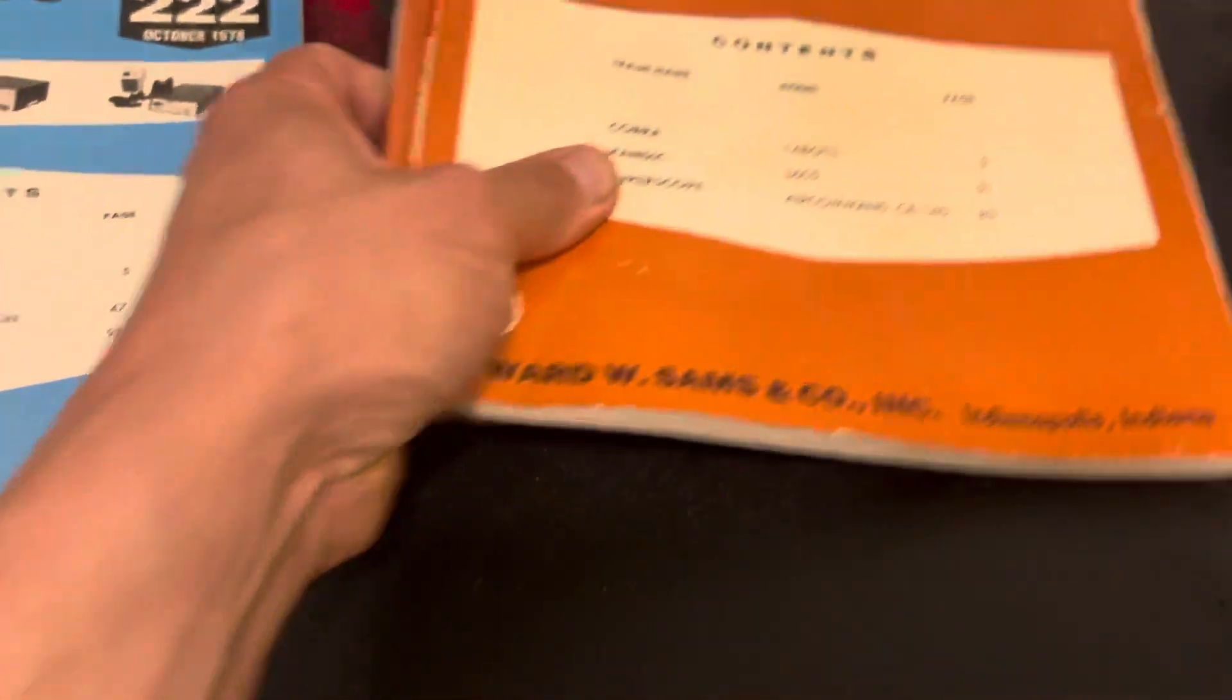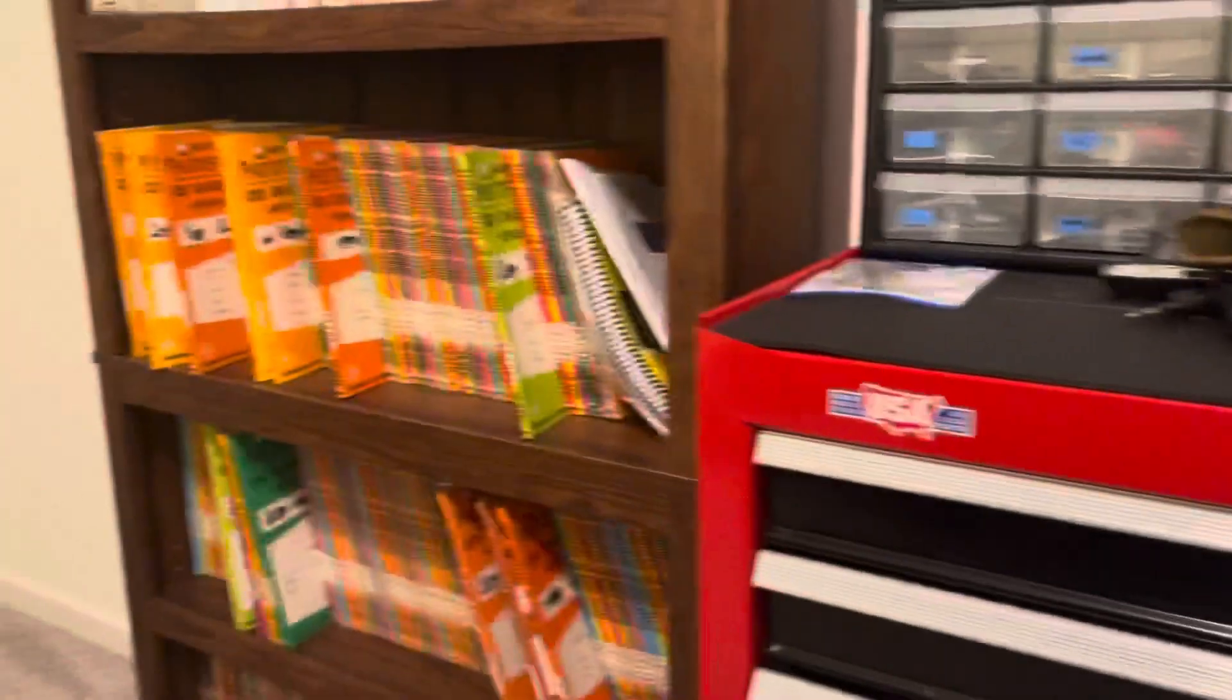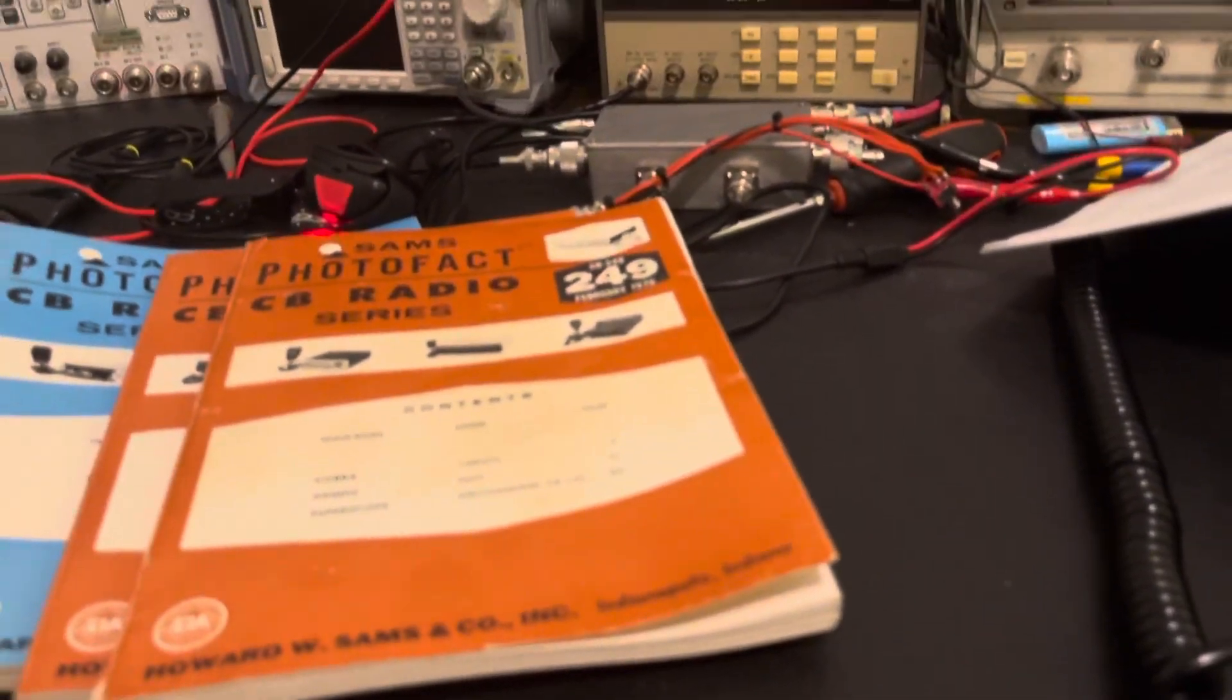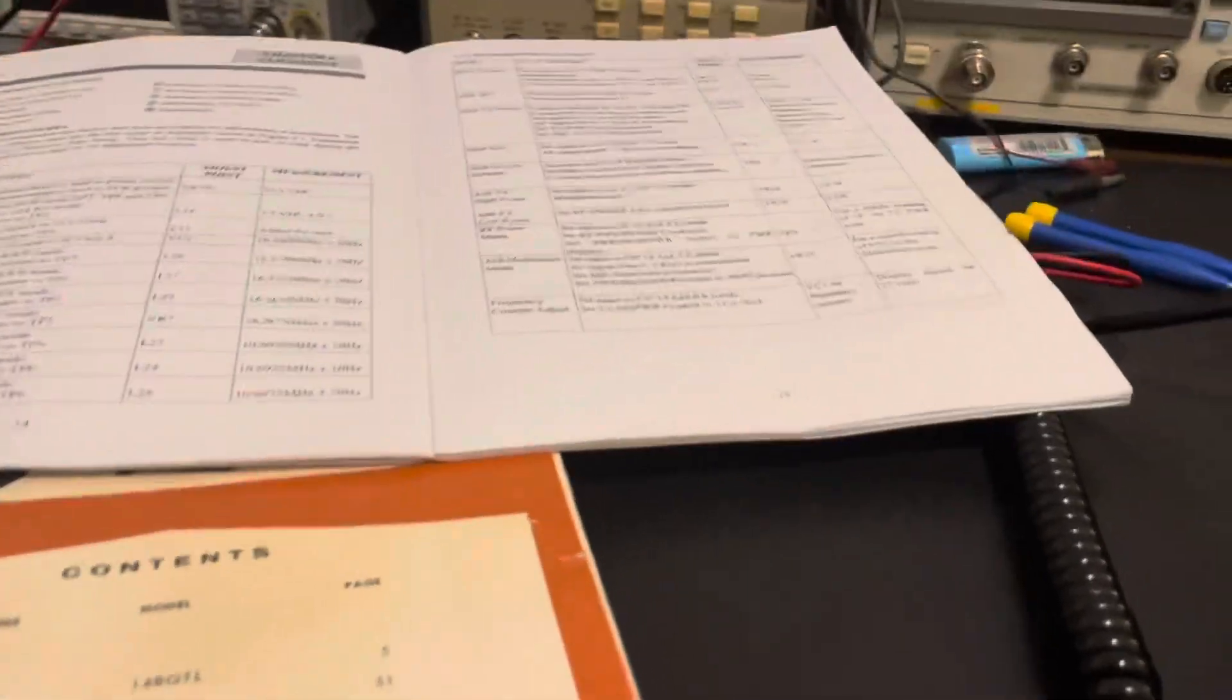It makes me wonder. I'm sure you could probably go through all kinds of Sam's photo facts and pick out all kinds of the most popular CBs out there and probably find the same.